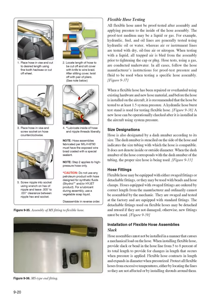Flexible hose testing: all flexible hose must be proof tested after assembly by applying pressure to the inside of the hose assembly. The proof test medium may be a liquid or gas. Hydraulic, fuel, and oil lines are generally tested using hydraulic oil or water, whereas air or instrument lines are tested with dry, oil-free air or nitrogen. When testing with a liquid, all trapped air is bled from the assembly prior to tightening the cap or plug. Hose tests using a gas are conducted underwater. Follow the hose manufacturer's instructions for proof test pressure and fluid to be used. When a flexible hose has been repaired or overhauled and before the hose is installed on the aircraft, it is recommended that the hose be tested to at least 1.5 times system pressure. A hydraulic hose burst test stand is used for testing flexible hose.